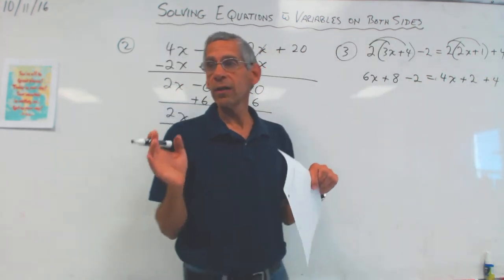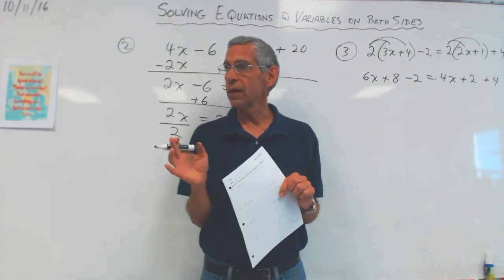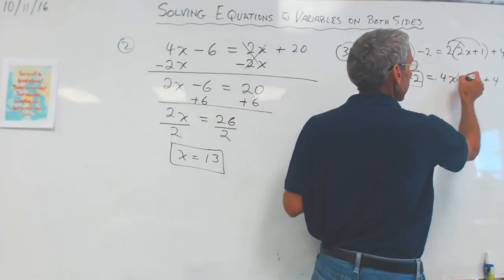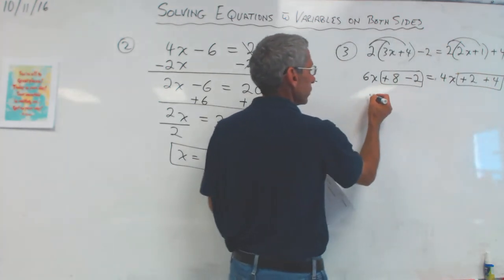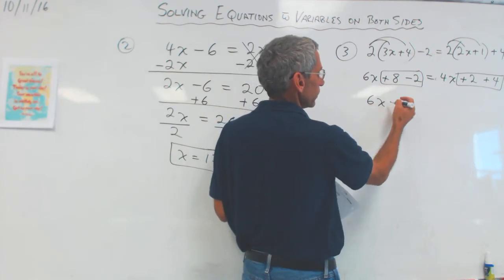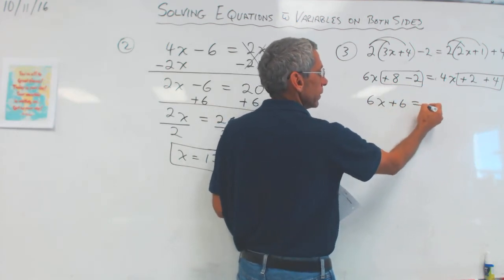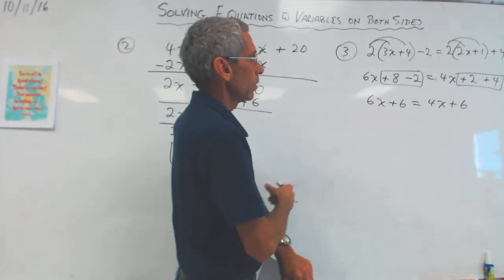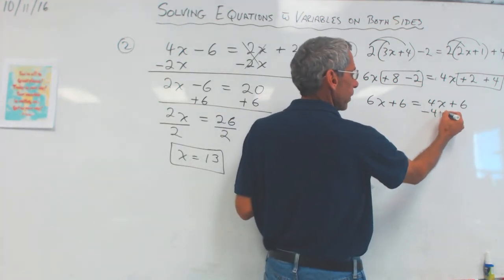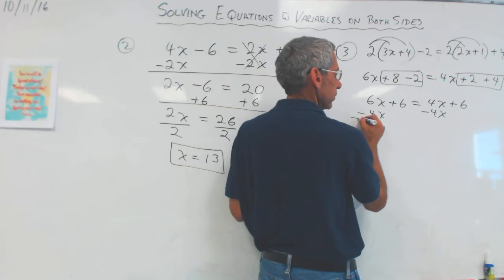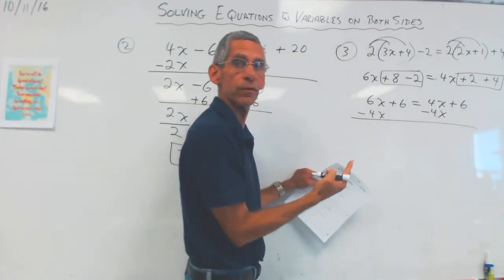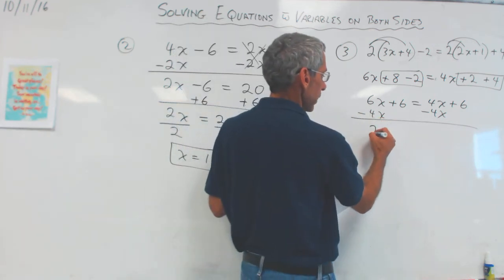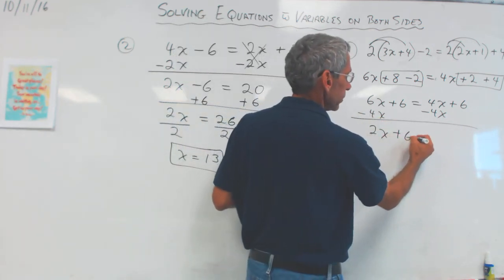Now I'm going to add my like terms before I move things around. What do I have that are like? Aren't these like terms right here? Yes. And these? Yes. So let's rewrite it. So I've got 6x plus 6 equals 4x plus 6. So now look. I'm going to subtract my 4x's. Subtract my 4x's. Because that's my smaller number of x's. So 2x plus 6 is equal to 6.